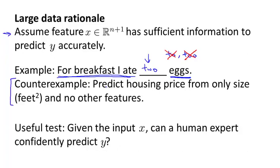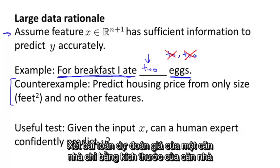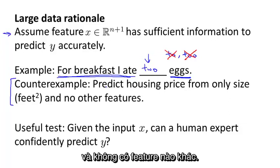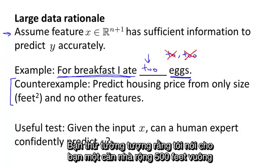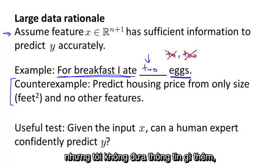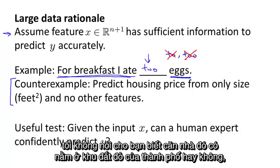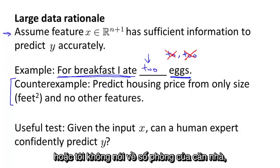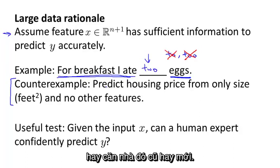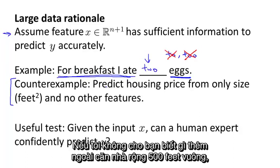For a counterexample, consider the problem of predicting the price of a house from only the size of the house and from no other features. So if you imagine I tell you that a house is 500 square feet, but I don't give you any other features. I don't tell you if the house is in an expensive part of the city, or if I don't tell you the number of rooms in the house, or how nicely furnished the house is, or whether the house is new or old.